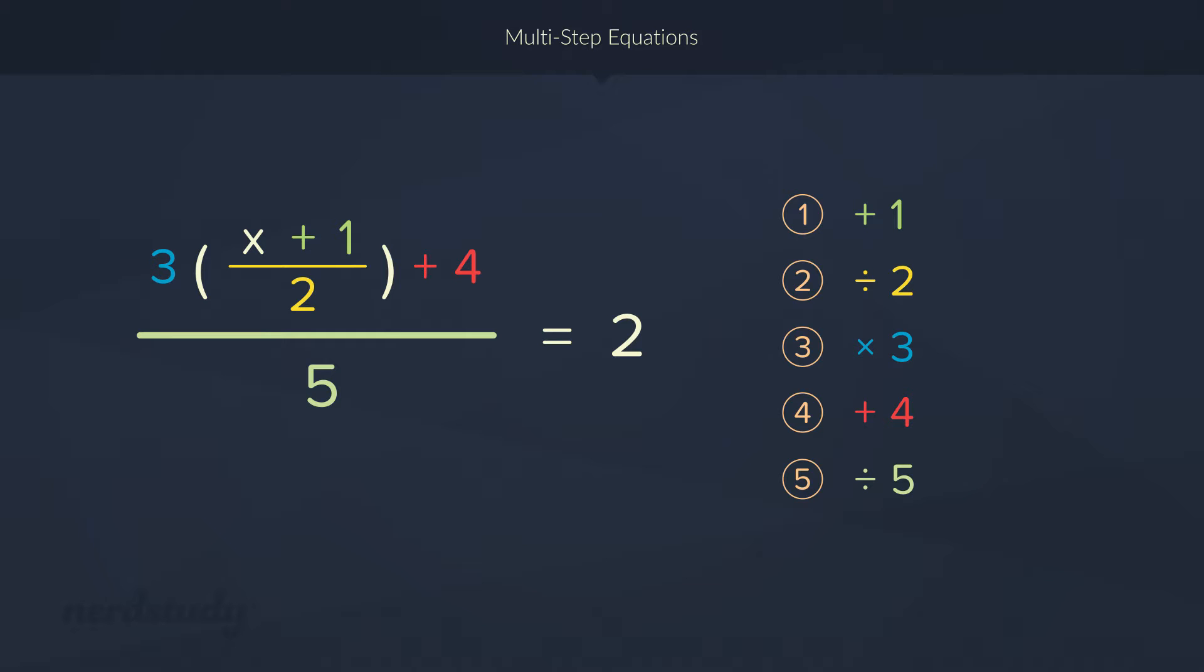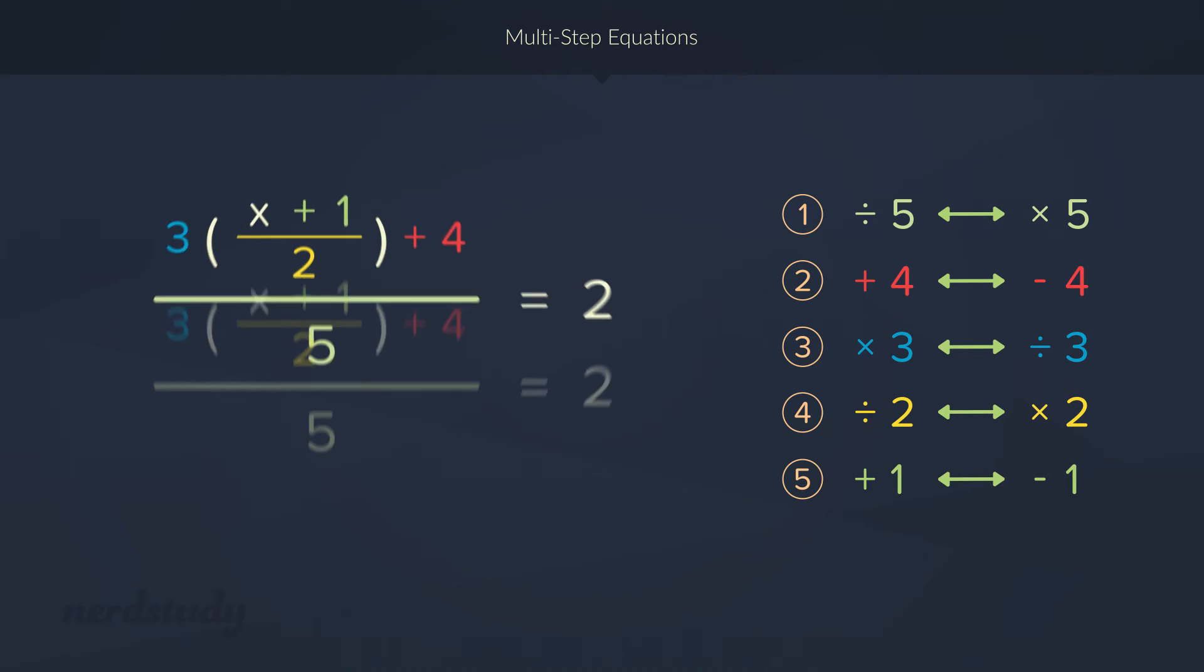Great. Now we have a mental list of BEDMAS order. So, now let's reverse it. And for each one of these, we're going to find its inverse operation. The inverse operation of dividing by 5 is multiplying by 5. We do it to both sides. So, the left side gets rid of the division of 5 and the right side becomes 10.